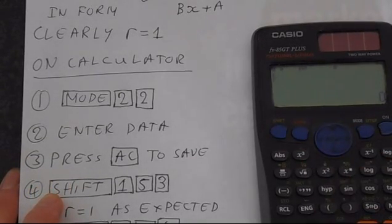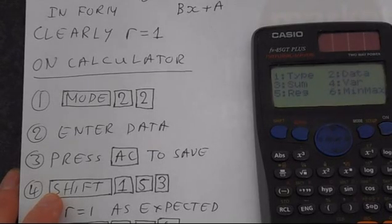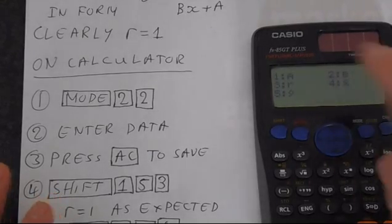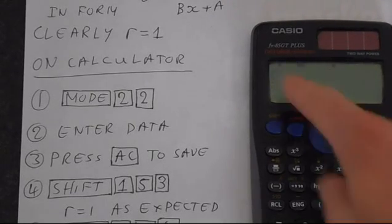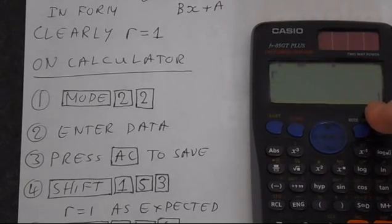Then we press shift, and then 1 gets us back into the stats menu. And if we press 5 we've got all of these regression options. Pressing 3 and then equals calculates R, which is 1, just as we expect.